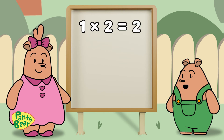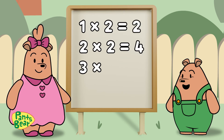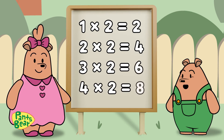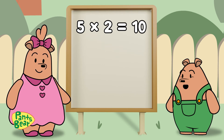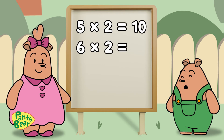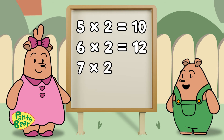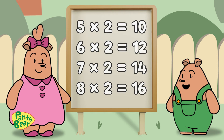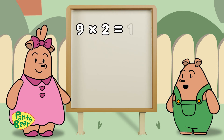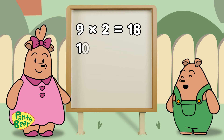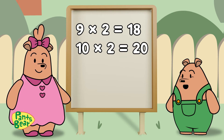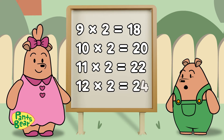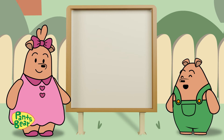Multiplication of 2. 1×2=2, 2×2=4, 3×2=6, 4×2=8, 5×2=10, 6×2=12, 7×2=14, 8×2=16, 9×2=18, 10×2=20, 11×2=22, 12×2=24. Goody!